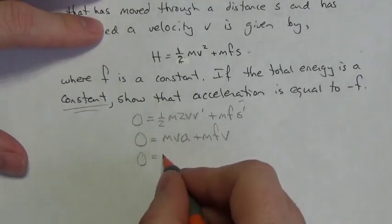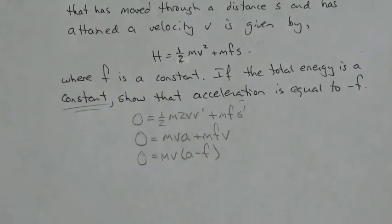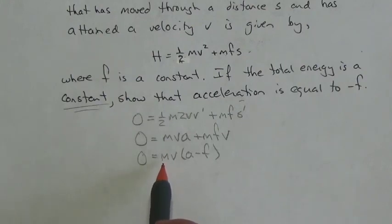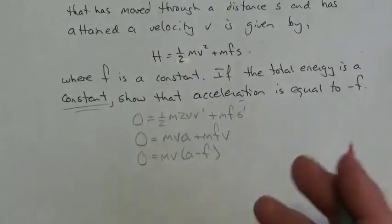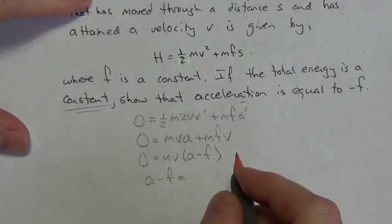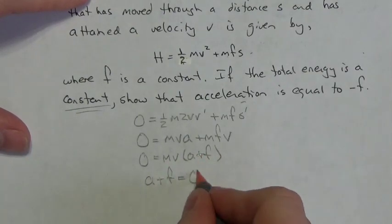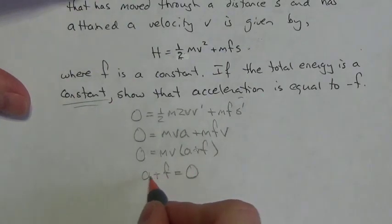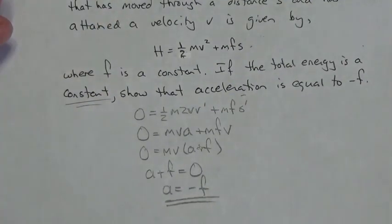I can factor out m and v, giving mv(a + f). This product equals zero, but m isn't zero, and the particle has attained some velocity so it's not zero either. Therefore a + f must equal zero, which means acceleration equals negative f. That's the result we were looking for.